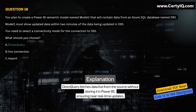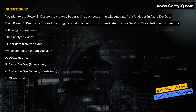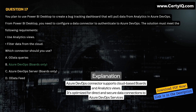Question 17. You plan to use Power BI Desktop to create a bug tracking dashboard that will pull data from analytics in Azure DevOps. From Power BI Desktop, you need to configure a data connector to authenticate to Azure DevOps. The solution must use analytics views and filter data from the cloud. Which connector should you use? A. OData Queries. B. Azure DevOps Boards Only. C. Azure DevOps Server Boards Only. D. OData Feed. Correct answer is B. Explanation: The Azure DevOps connector supports cloud-based boards and analytics views. It's optimized for direct and secure data connections to Azure DevOps services.